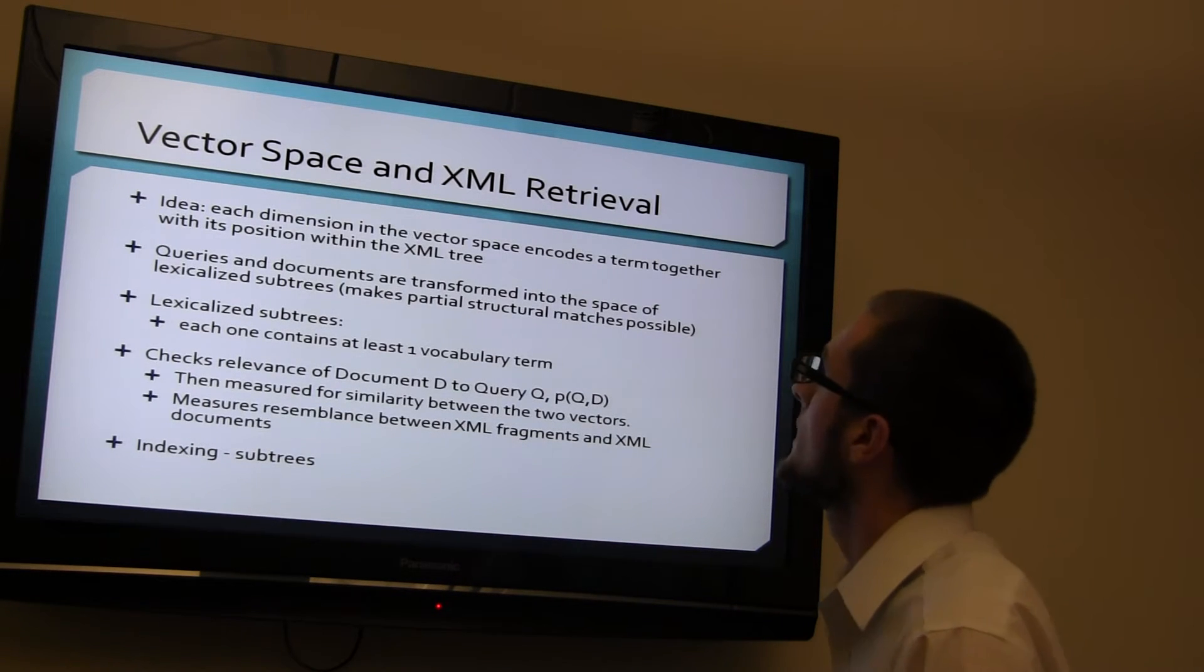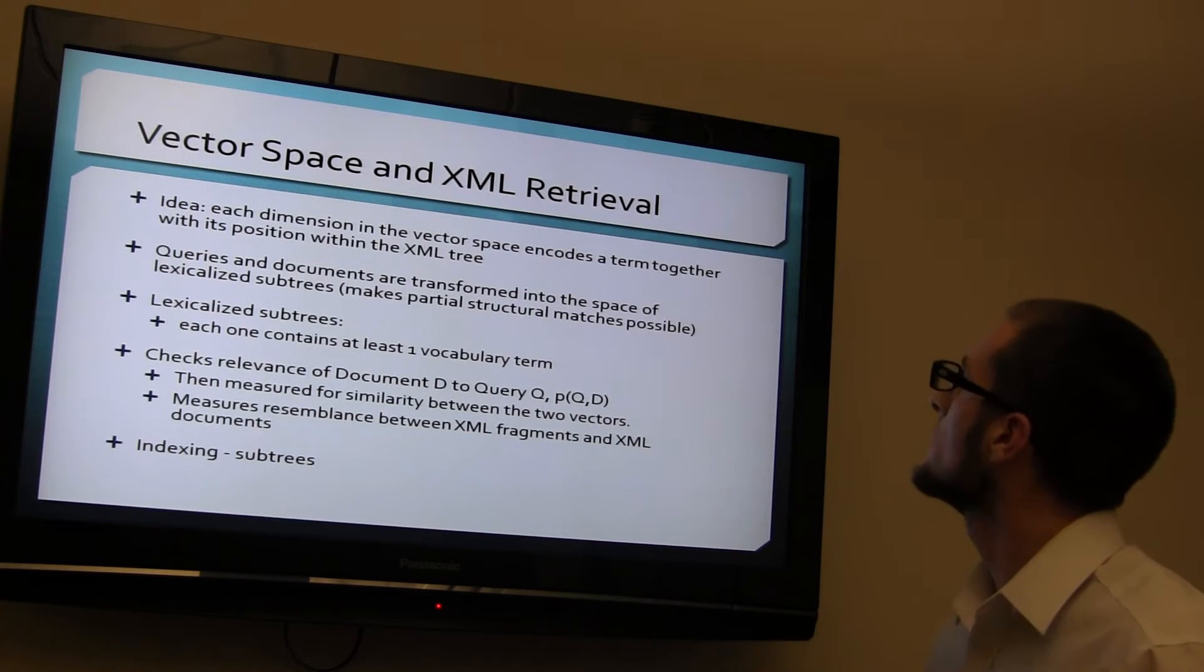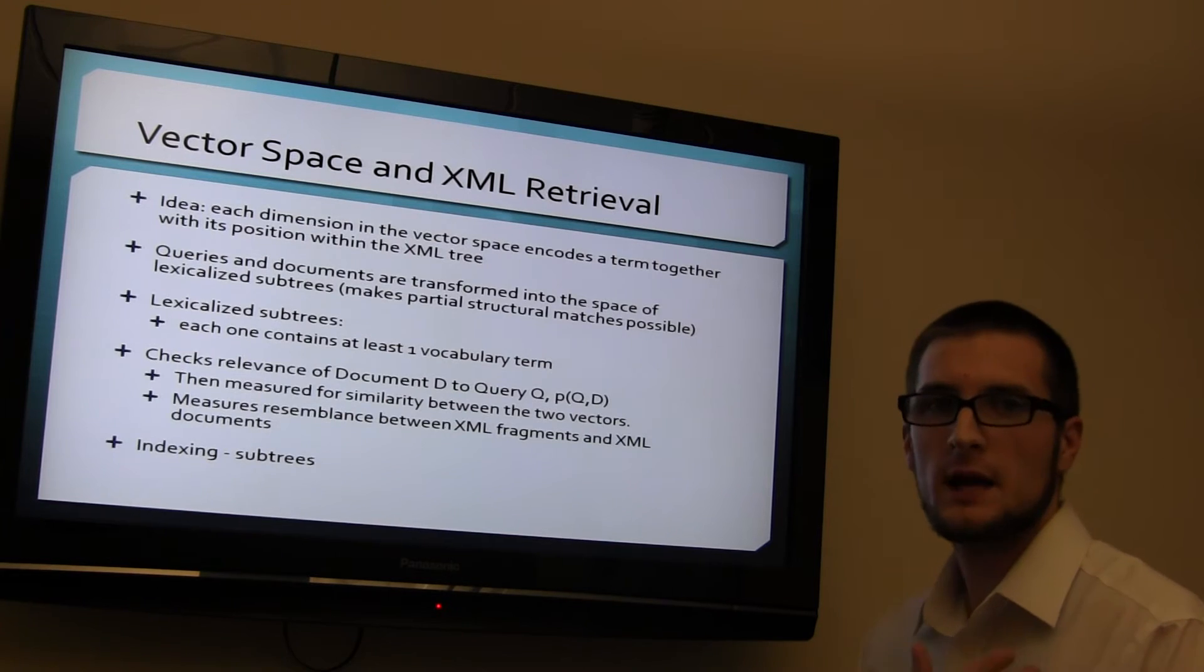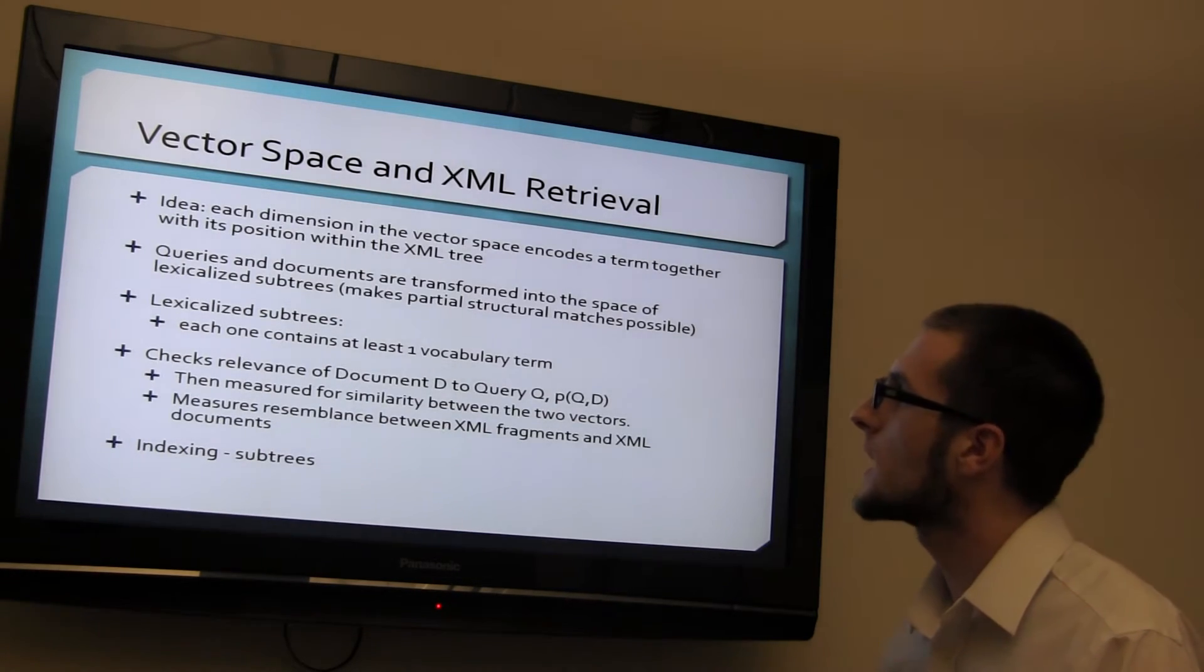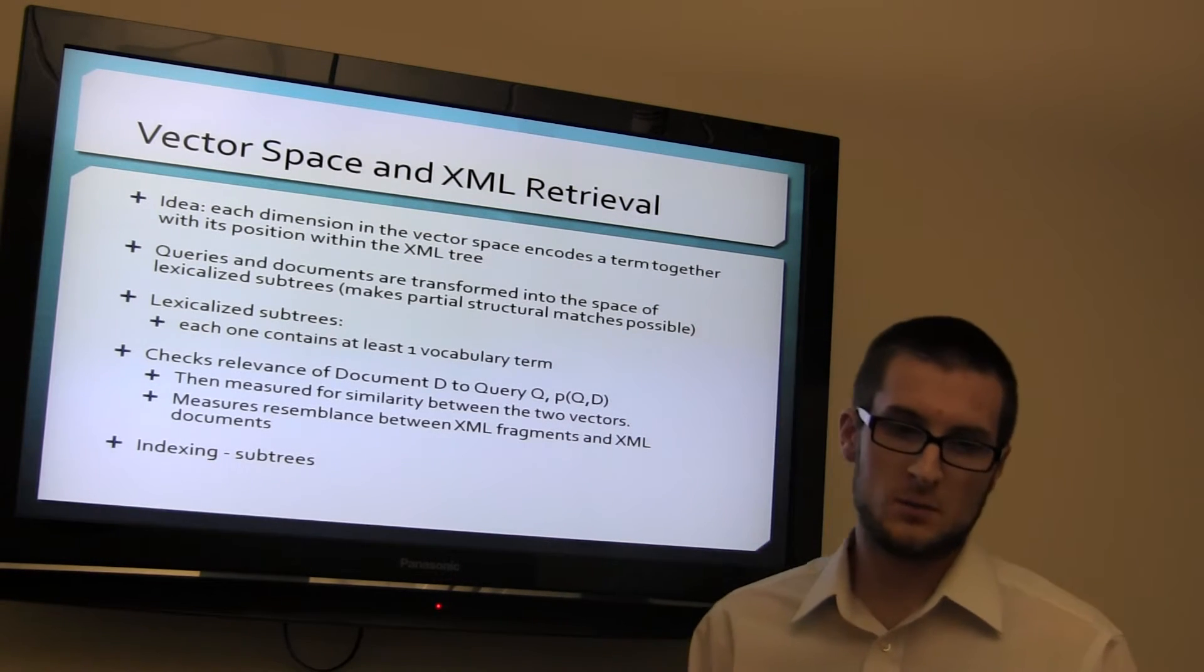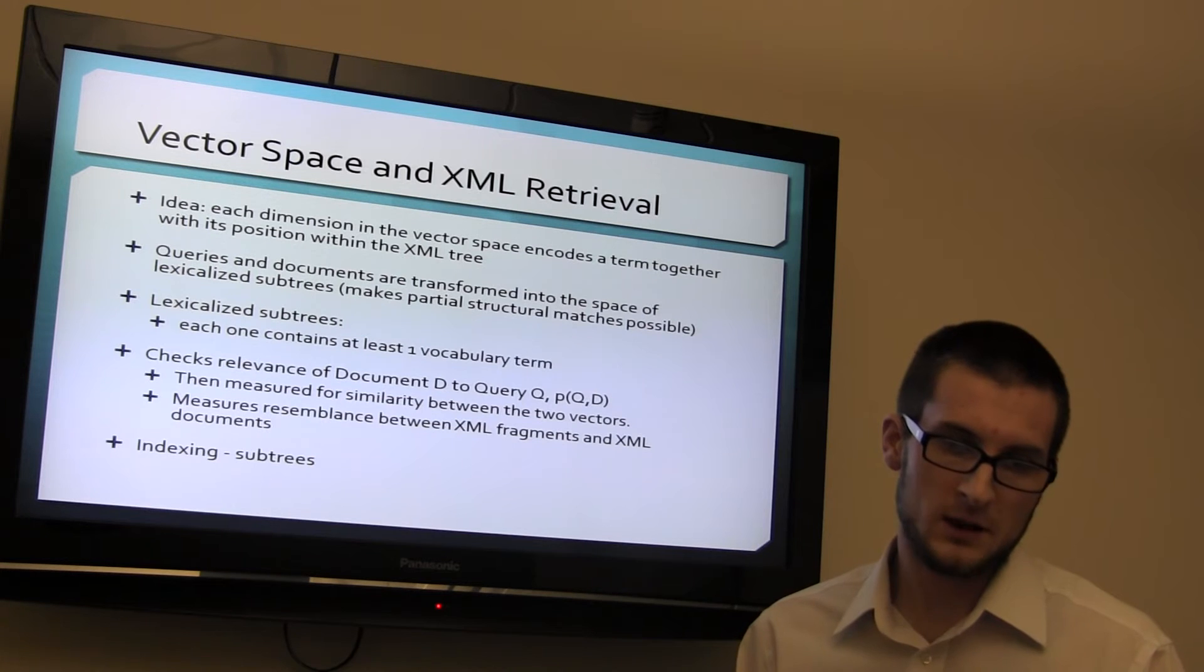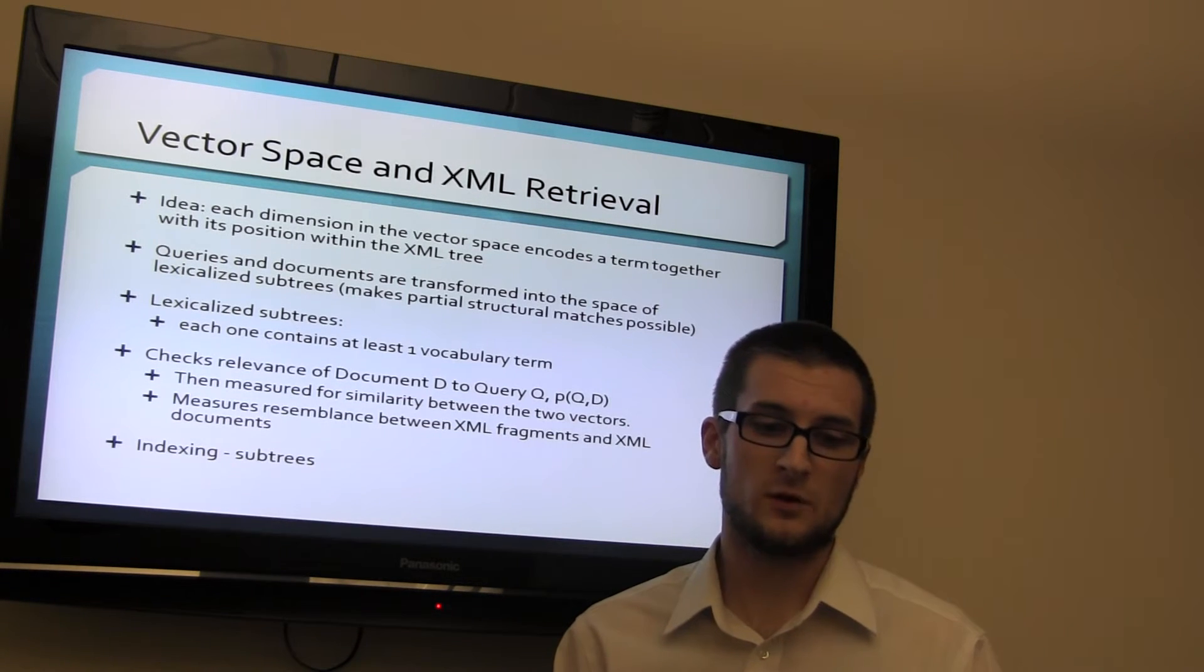Vector space and XML retrieval. The idea is that each dimension in the vector space encodes a term together with its position within the XML tree, which is what I gave an example of and had on the screen earlier, the tree of the hierarchy. Queries and documents are transformed into the space of lexicalized subtrees, which makes particular structure matches possible. Everything's got to be split up. Lexicalized trees, each one contains at least one vocabulary term.